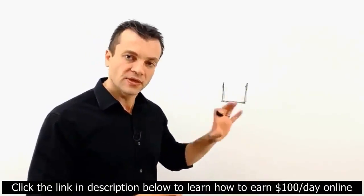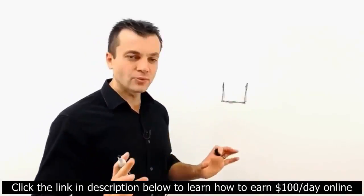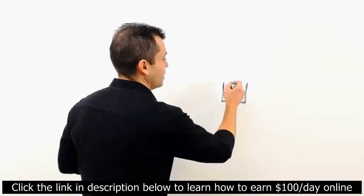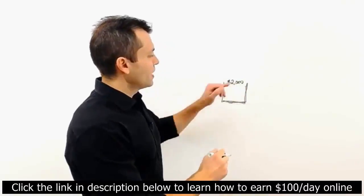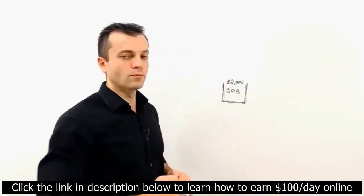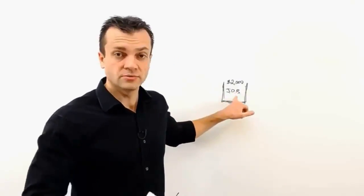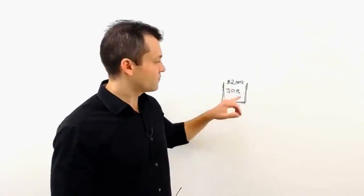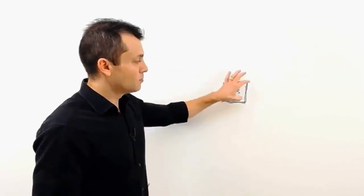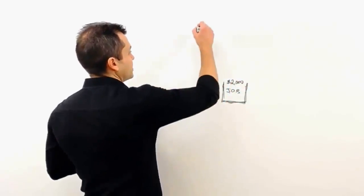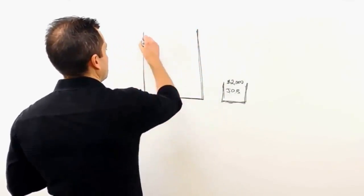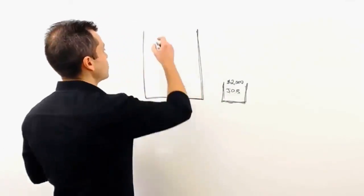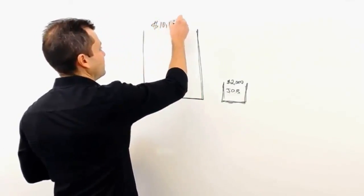I'm a very visual guy. Most people trade hours for dollars and they have this very small bucket — they're making about two thousand dollars a month. It's called a job: Just Over Broke. Nothing wrong with that, a lot of people love their jobs, but probably not many of you here would stay there for the rest of your life. So what we need to do is get a bigger bucket. This bigger bucket represents your income goal — the magical number seems to be ten thousand dollars a month.